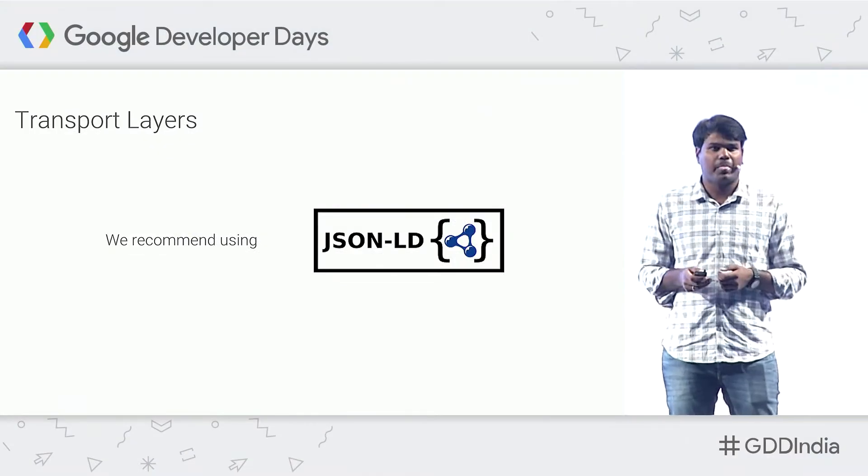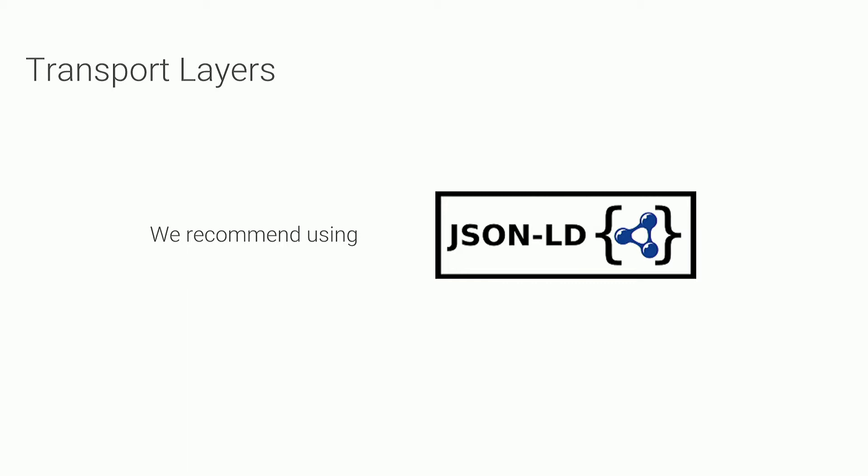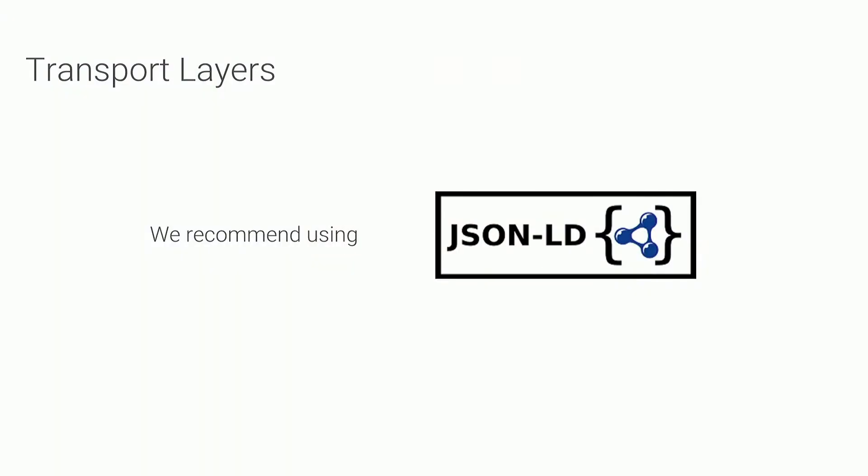So why JSON-LD? JSON-LD is a JavaScript notation that you can embed into your HTML using a script tag, or you can send it directly as a feed. Unlike XHTML and microdata, which are interleaved with the visible text on your page, JSON-LD lets you express your data far more freely. For example, marking up nested items — like the movie name of an event in a particular location — is very easy to do with JSON-LD, but hard to do with microdata and RDFA.